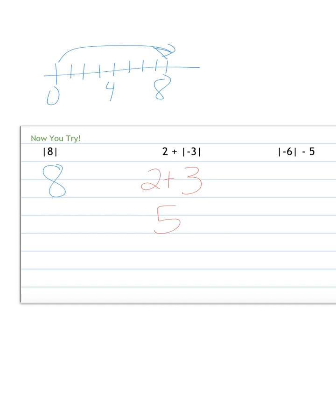Next one, absolute value of negative 6 minus 5. First, find the absolute value. Negative 6 is 6 spots away from 0, minus 5. 6 minus 5 is 1.